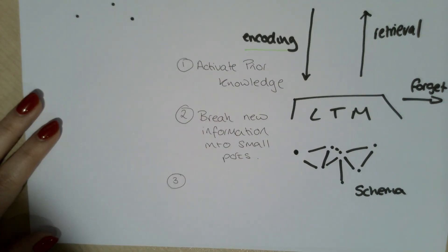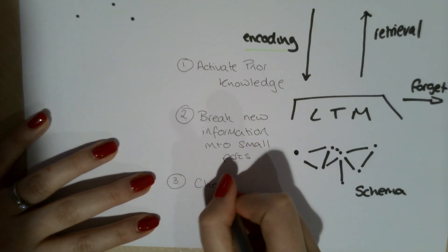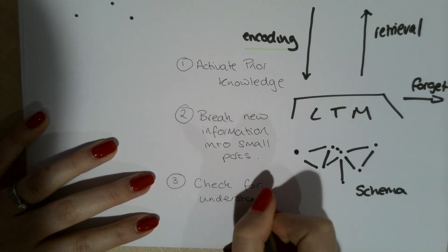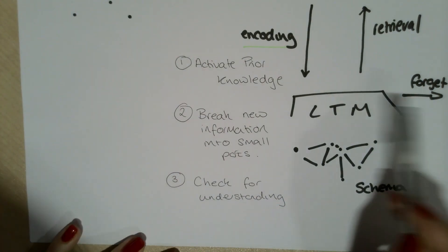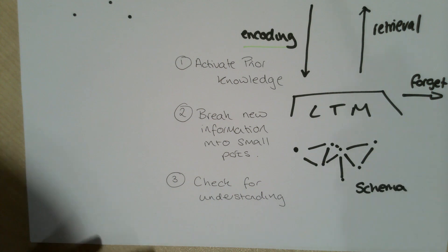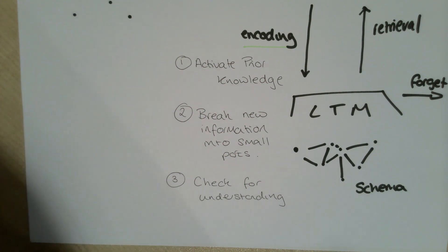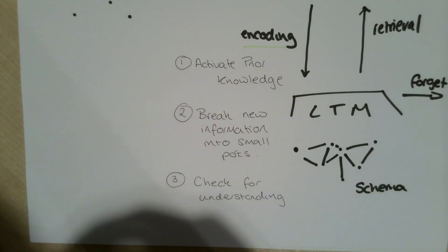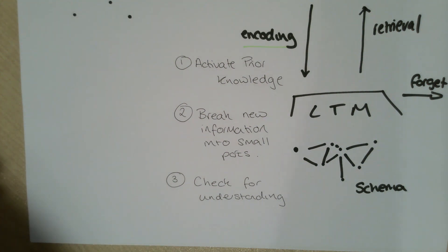The third thing we need to do is check for understanding. It is really important that the information that we encode in our long-term memory is correct. There is a possibility that pupils will encode incorrect misconceptions. We need to plan our questioning for after the introduction of new information to check that pupils have understood what we have taught and that they have encoded the correct information into their long-term memory.